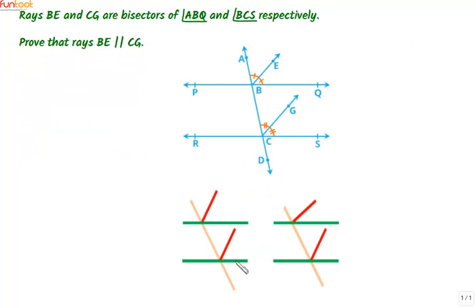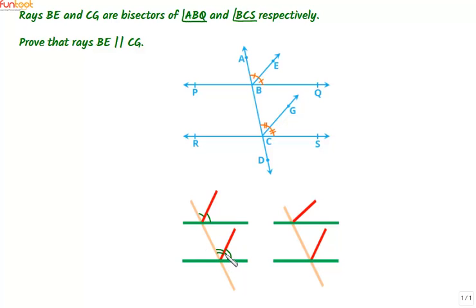Let's model the proof using a set of straws. In the first arrangement, the green straws are parallel and the red straws are placed so that they bisect the corresponding angles. That means this angle is equal to this angle, and this angle is equal to this angle. We can see that when the red straws are bisectors of the corresponding angles, they are parallel.